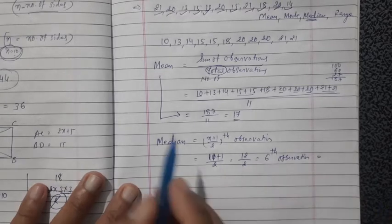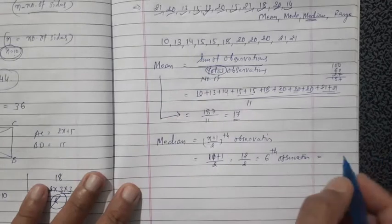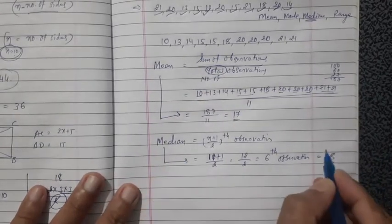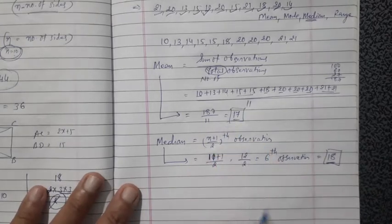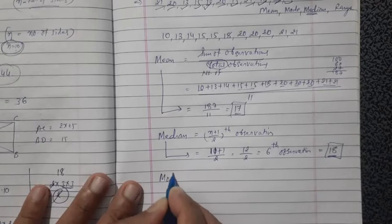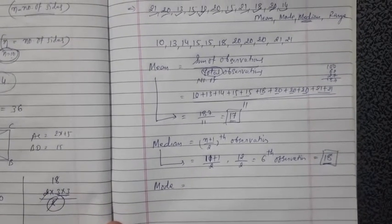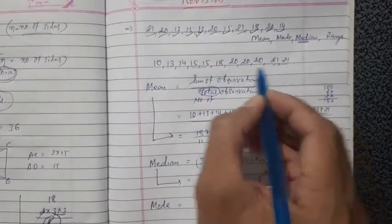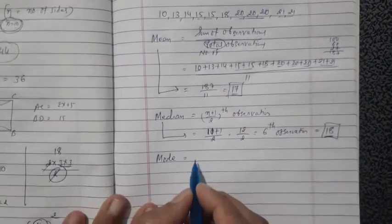Counting to the 6th value in the arranged data: 1, 2, 3, 4, 5, 6 — that is 18. So median equals 18. Now for mode: 15 appears 2 times, 21 appears 2 times, but 20 appears 3 times.